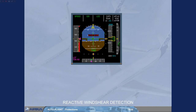If the aircraft encounters wind shear conditions, detected by the FE part, a red wind shear message is triggered on both PFDs, associated with an oral 'wind shear, wind shear, wind shear' warning. This reactive wind shear warning is available from lift-off to 1,300 feet at take-off, and from 1,300 feet down to 50 feet during landing, with at least CONF1 selected.